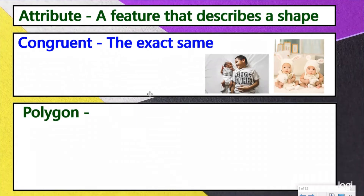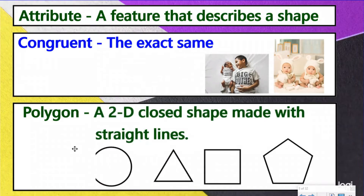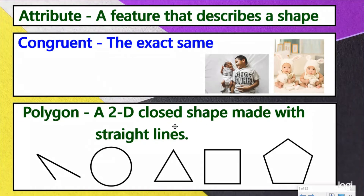Our last mathcabulary word is a polygon. A polygon is a two-dimensional closed shape made with straight lines. The attributes to be considered a polygon are: a two-dimensional shape — that means you have length and width, so we think of that as being flat, kind of like flat Stanley. Closed shape means the lines are connected — if you were a dog, you couldn't run out of here. And made with straight lines.